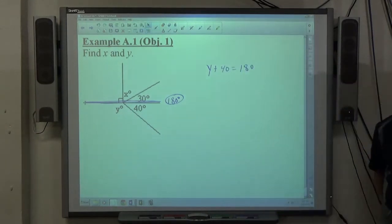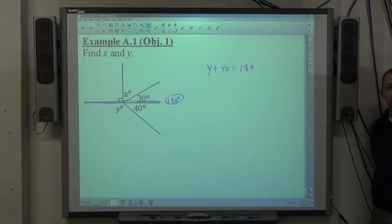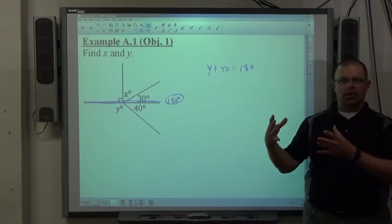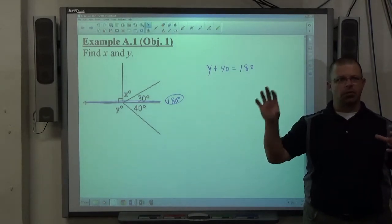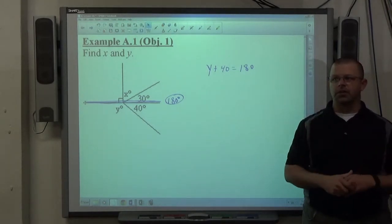I made a big deal about this last year, I'm going to do it again this year. When you're doing a geometric problem using algebra, write an equation. Every single time, write an equation. Use some property to allow yourself to write some equation involving what you're looking for and what truth is there.